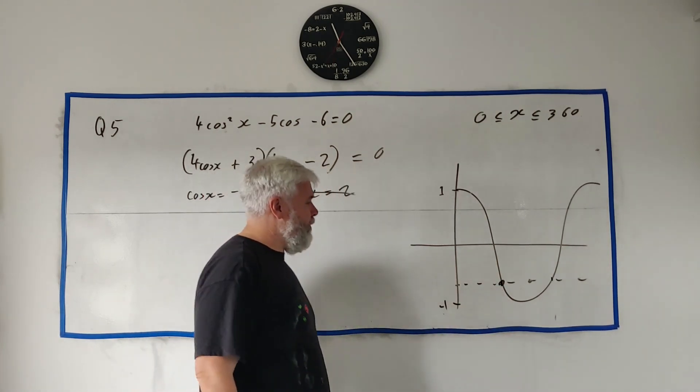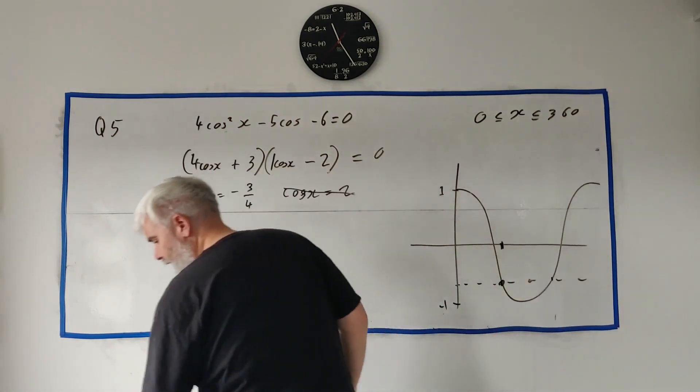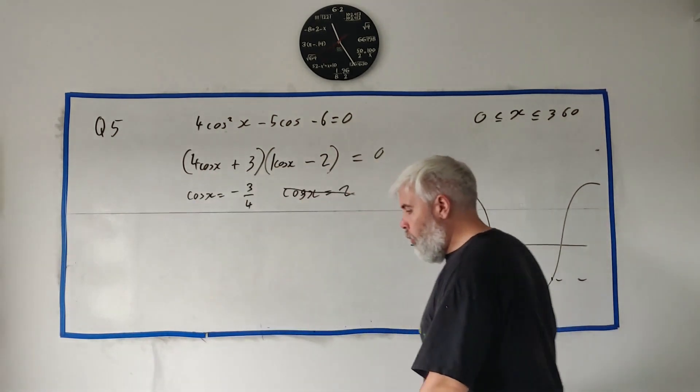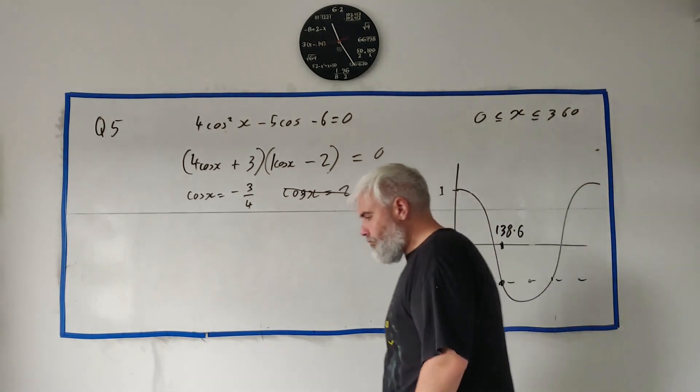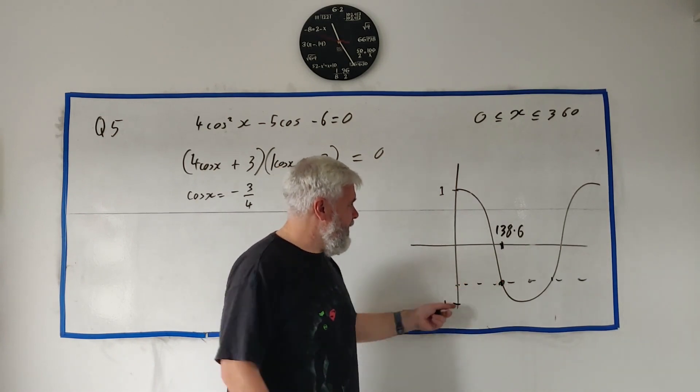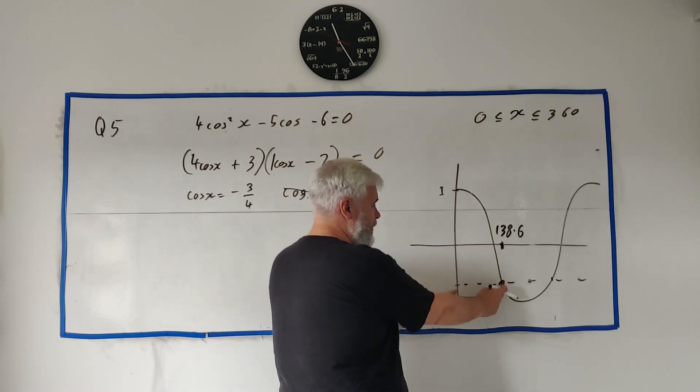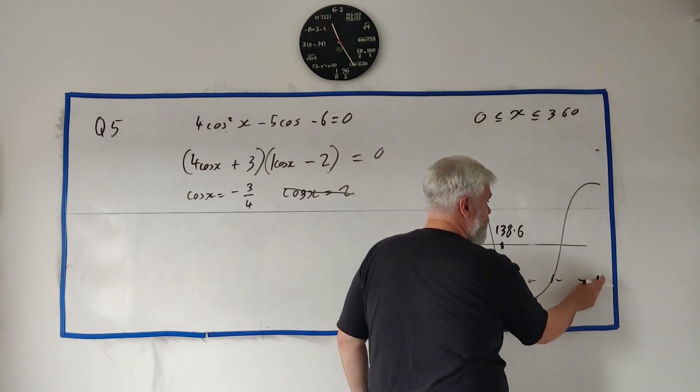Put it in a calculator. My calculator at least, maybe you have a better one. My calculator will give me this answer here. And that is 138.6. Give me the answer. You have to figure out the next one. A couple of ways to do it. You could say that's 138 from zero. So it should be the same distance from 360.